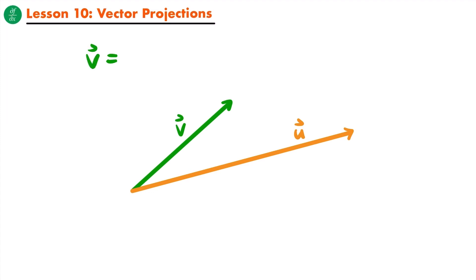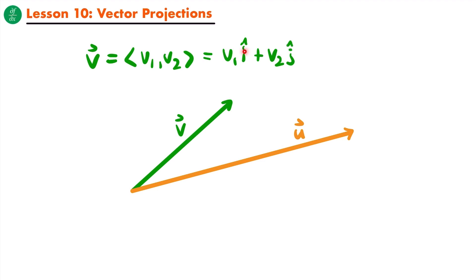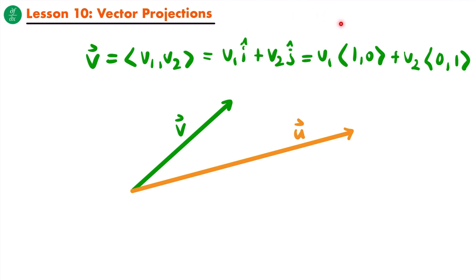If we have vector v equal to the position vector of the point (v1, v2), we could rewrite this vector using our standard unit vectors. This would be equal to v1 times i plus v2 times j, where vector i is a standard unit vector in the x direction and vector j is a standard unit vector in the y direction. Rewriting in component form, this equals v1 times (1,0) plus v2 times (0,1).